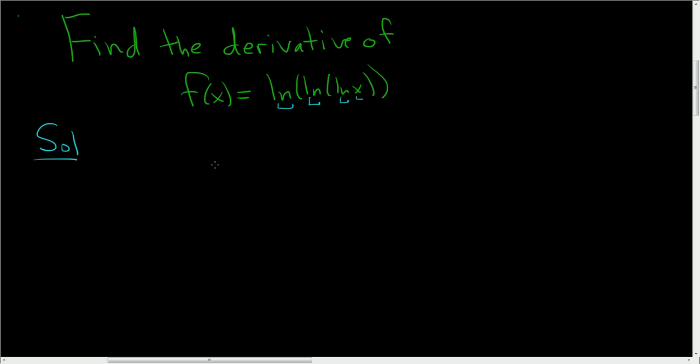So obviously we have to use the chain rule because we don't just have ln x. If we had ln x, the derivative of ln x is 1 over x.